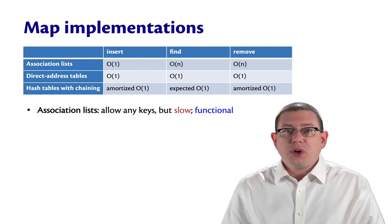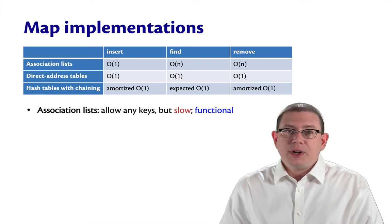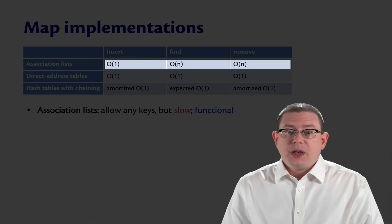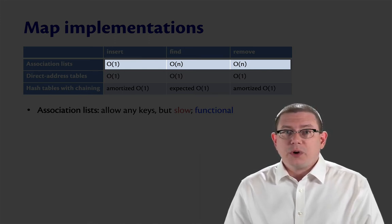The three important operations for those—insert, find, and remove—have had different asymptotic efficiencies. For association lists, those operations were slow. The find and remove, in fact, were linear time.